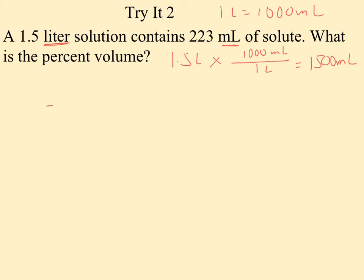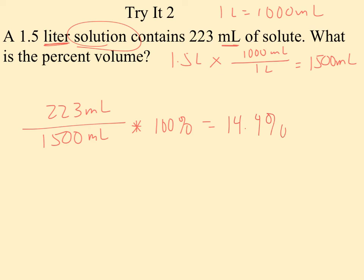So now when I set my problem I have 223 milliliters. This time they've told me this is my total solution. So I just put the 1500 down here. I don't add the 223 to it. That's already been taken care of for me. And I multiply by 100 percent. So in this case I get a percent concentration by volume of 14.9 percent.